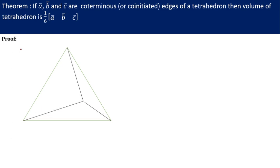First of all I am drawing one tetrahedron whose vertices are O, A, B, C. Now as mentioned in the theorem, A bar, B bar and C bar are coterminous or co-initiated edges of the tetrahedron. Now coterminous means terminating at the same point and co-initiated means starting from the same point. So I have shown three edges starting from the point O. OA bar is A bar, OB bar is B bar and OC bar is C bar.